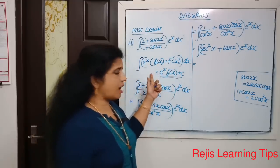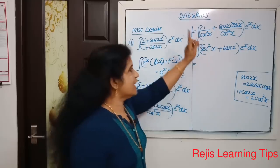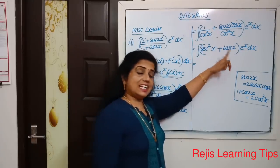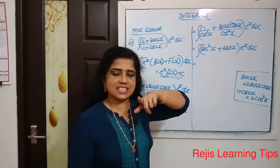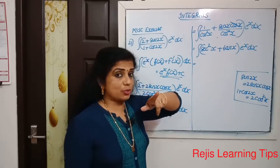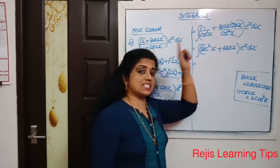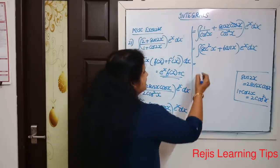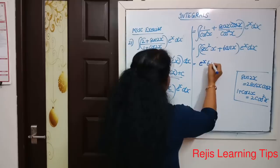Looking at our formula, we identify f(x) = tanx and f'(x) = sec²x, since the derivative of tanx is sec²x. Applying the formula, the answer is e raised to x · tanx + c.